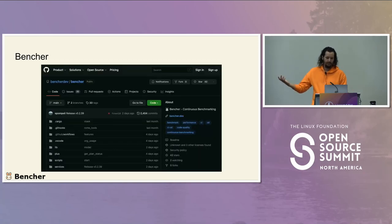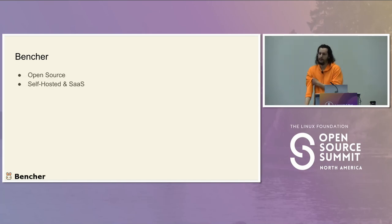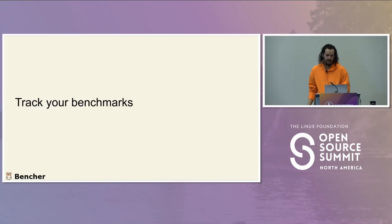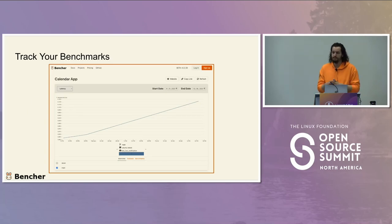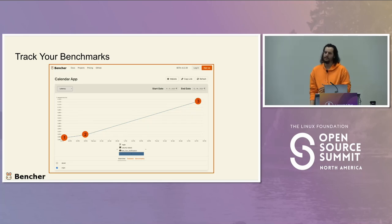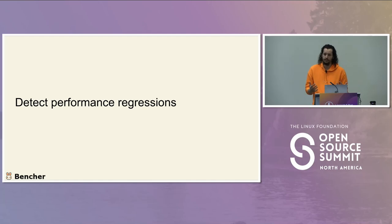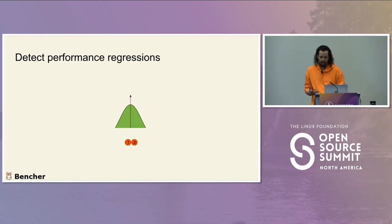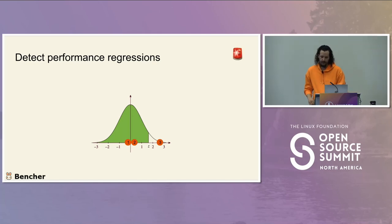Bencher is an open source tool I built to accomplish continuous benchmarking. It's both self-hostable and has a SaaS offering. It has multi-tenancy, multi-language support out of the box, and statistical thresholds and alerts. There's also a GitHub action to make it easy to integrate. Going through our FizzBuzz Fibonacci example: the first and second versions probably wouldn't show much difference, but by the third version that's where we'd see the performance regression. We want an alert to let us know that happened.